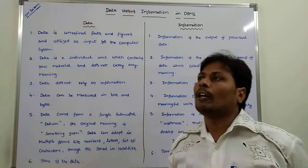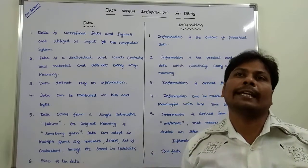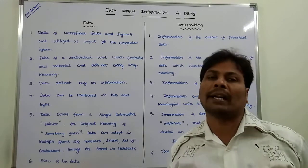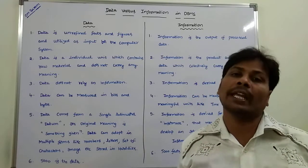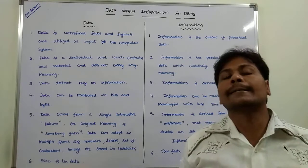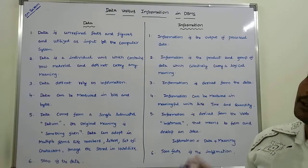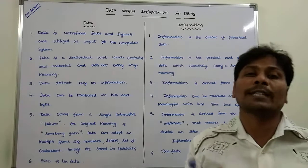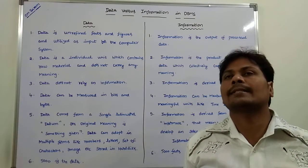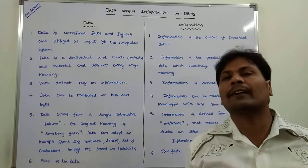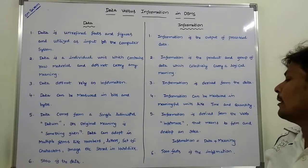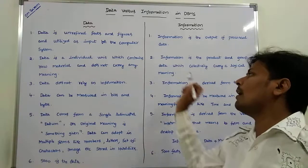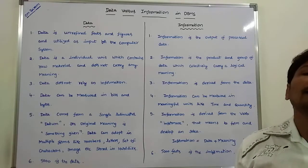For example, 5000 is data because the number 5000 has no meaning on its own. Now if we provide some meaning to it, then 5000 becomes information. These are the differences between data and information.